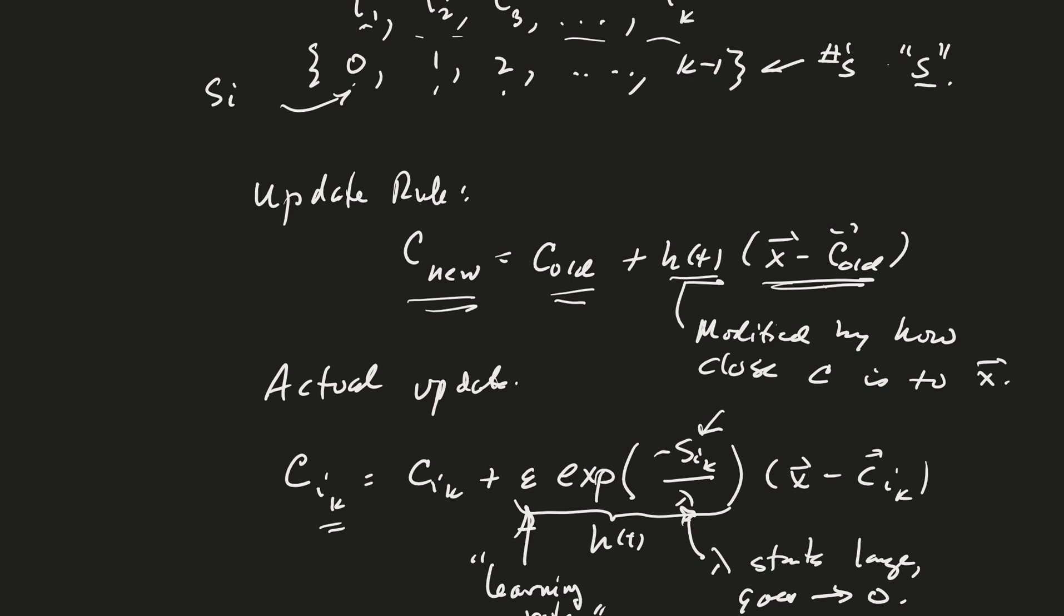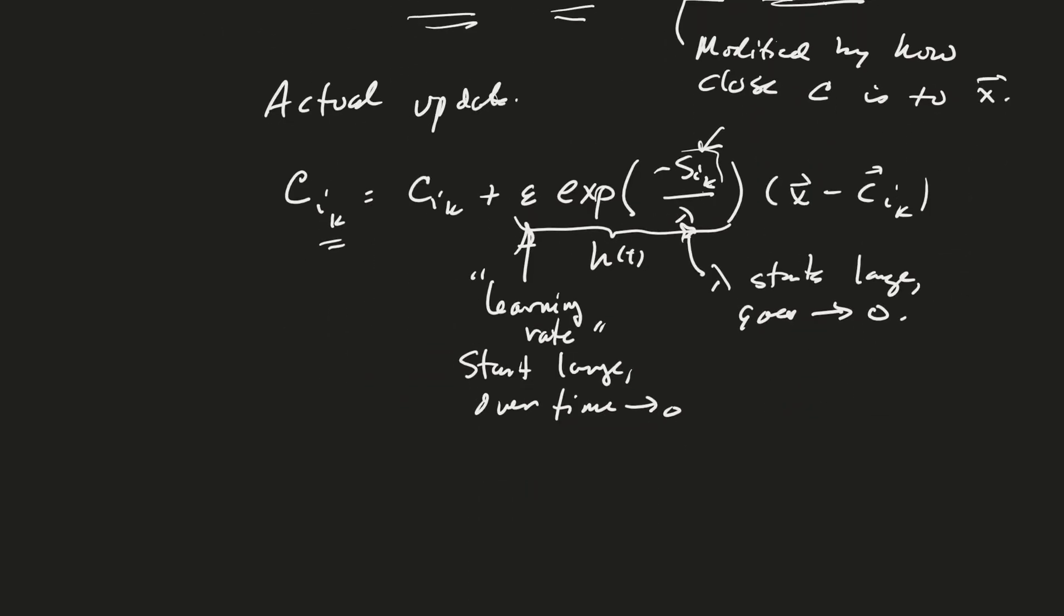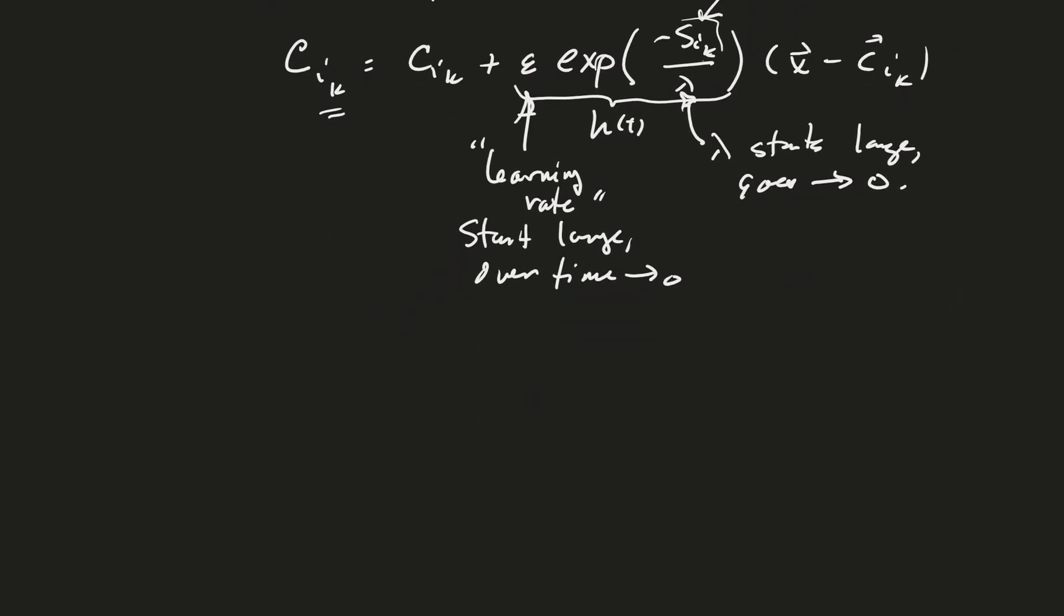The winner has a zero there, and the farthest away vector has a K minus one there. That's this value right here. I guess you can't see where I'm pointing. So what does that exponential function look like? Just a quick draw here.